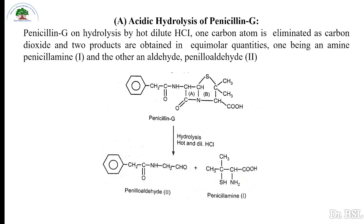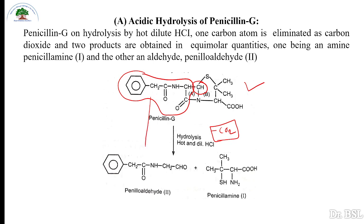Acidic hydrolysis of penicillin G: when penicillin G is treated with hot and dilute hydrochloric acid, there is loss of one carbon as CO2 (carbon dioxide). We obtain penilaldehyde from one part and penicillamine from another part. These two compounds are obtained by the acidic hydrolysis of penicillin G, with one carbon lost as carbon dioxide.